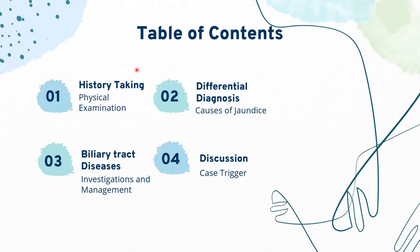Here's the table of contents of today's video. First, we'll talk about history taking and physical examination of a patient who comes in with jaundice. Next, we will look at differential diagnosis and the classification of causes of jaundice. Thirdly, we will look at some important biliary tract diseases, their pathophysiology, and relevant investigation and management plans. Lastly, we'll go back to our case trigger for further discussion.